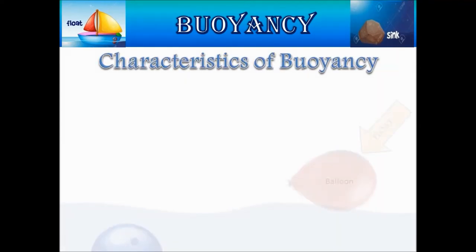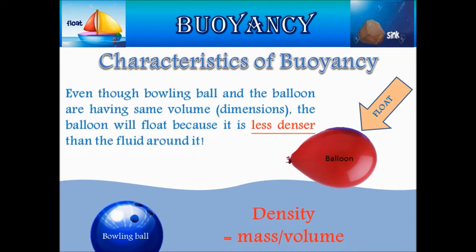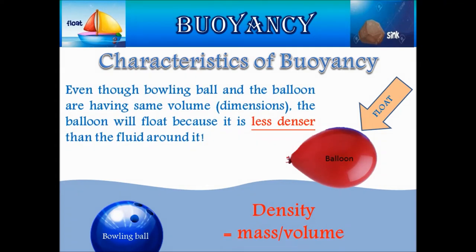Characteristics of buoyancy. Let us consider a bowling ball and a balloon filled with air. If we try to immerse them in water, the bowling ball will sink and the balloon will float. It is because density is the ratio of mass and volume. Even though the bowling ball and the balloon have the same volume, the mass of the bowling ball is larger than the balloon, so the density of the bowling ball is more than that of the balloon.